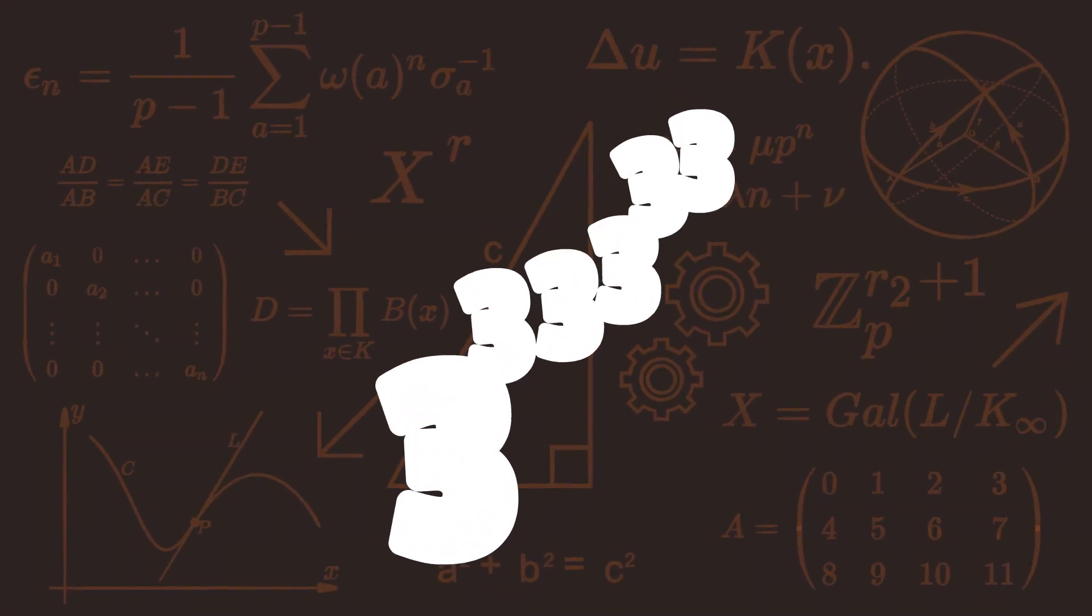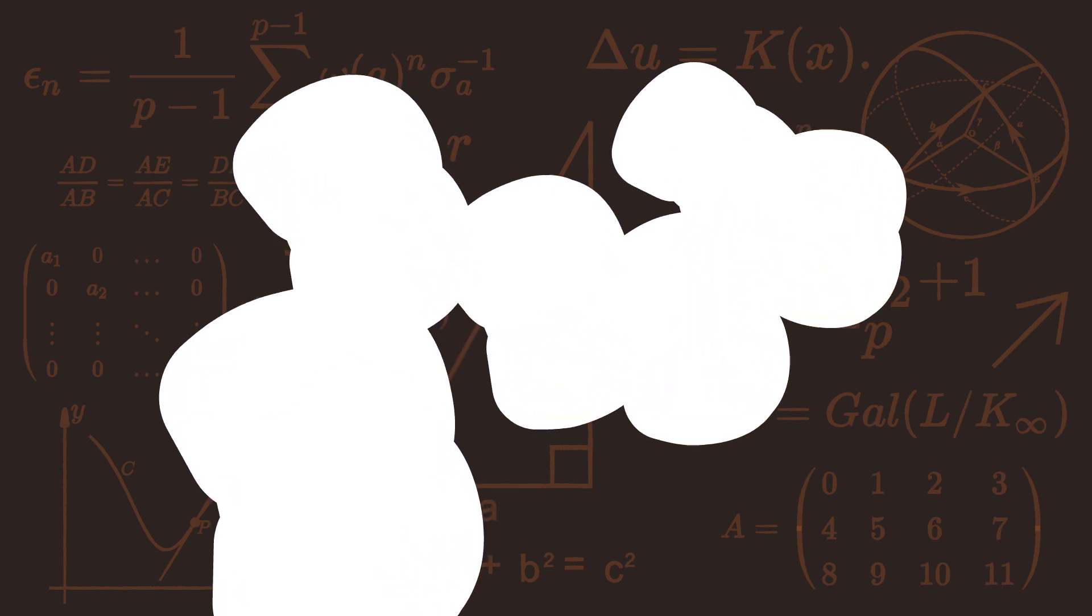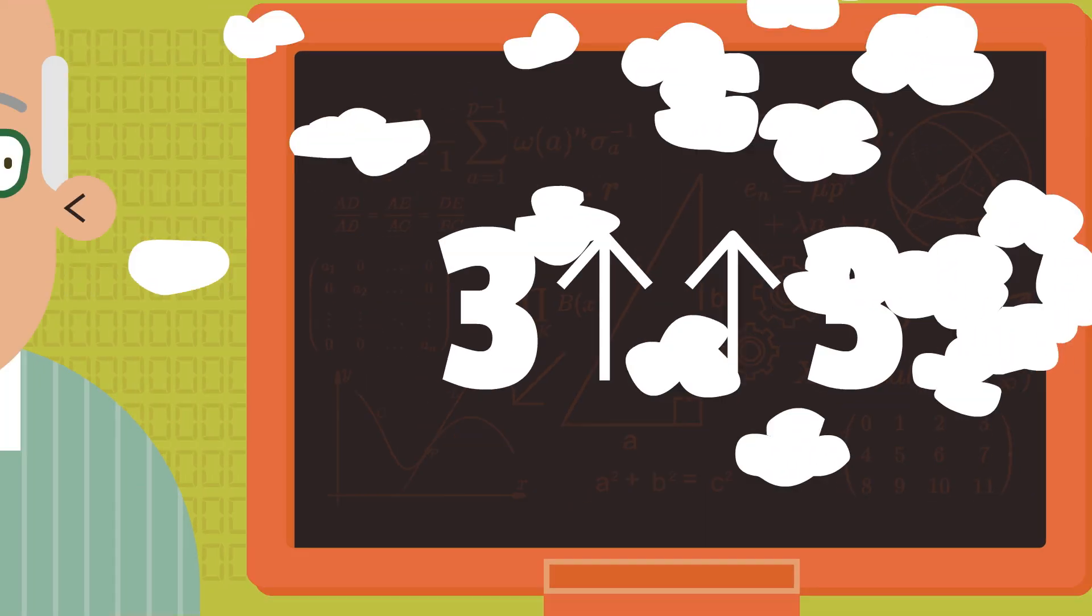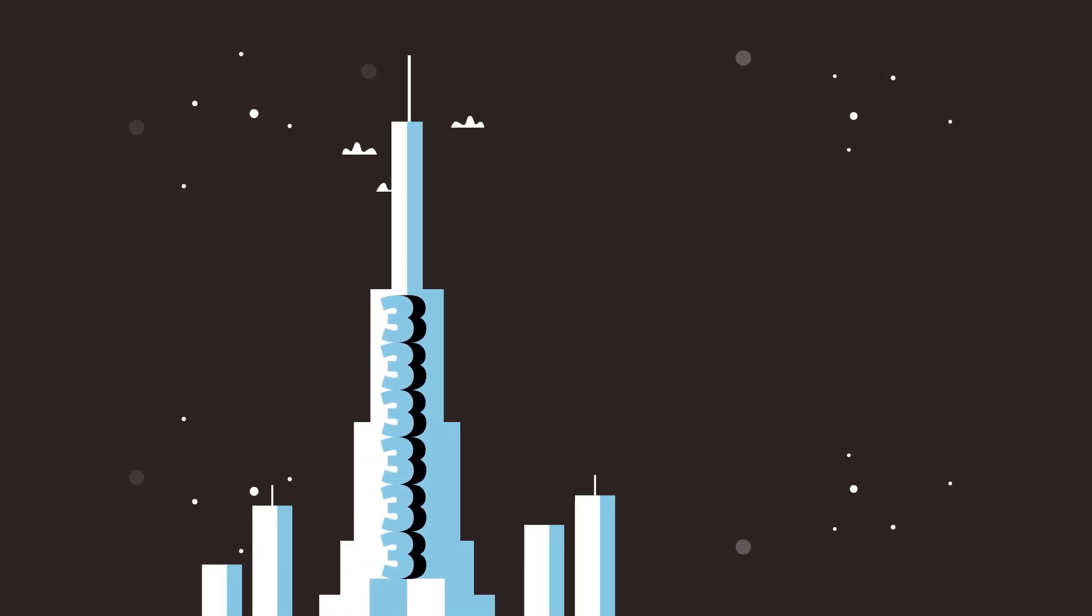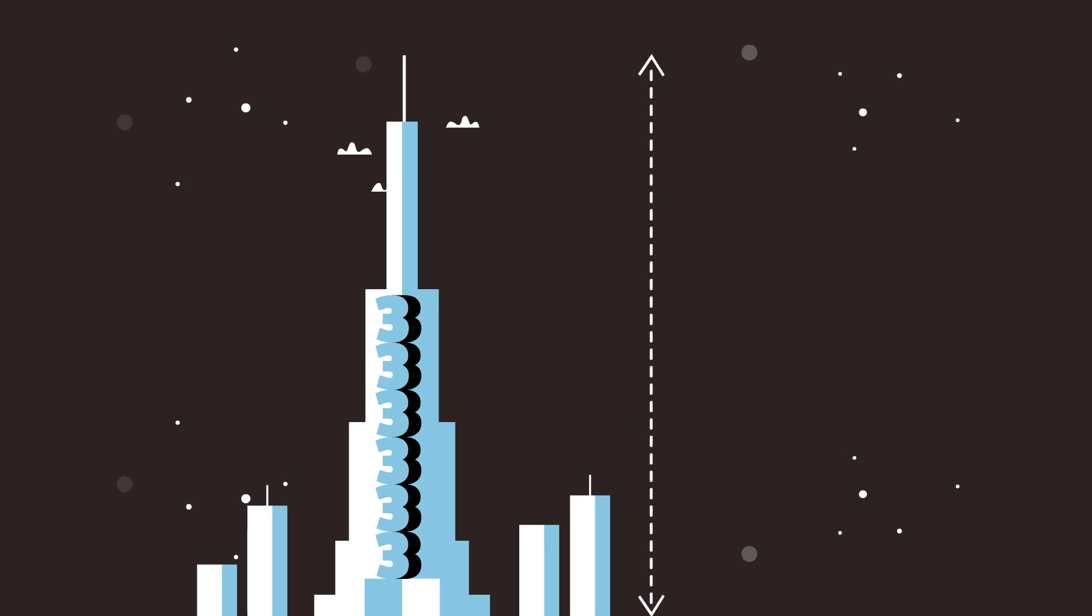But what if the number of levels in a tower is so big that we need a tower to write it? We will simply add one arrow. This could be translated as a tower of 3 where the number of levels is itself a tower of 3 that's 3 levels high.